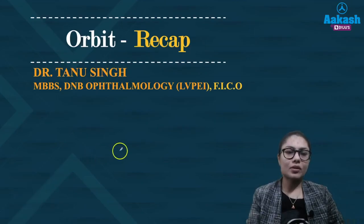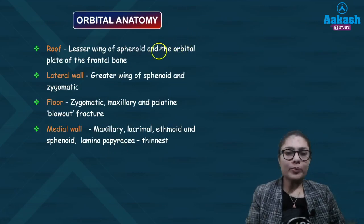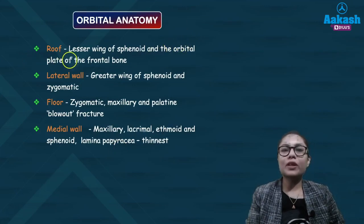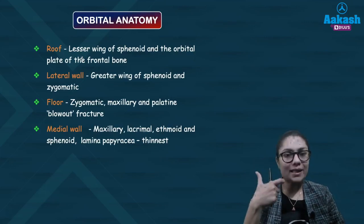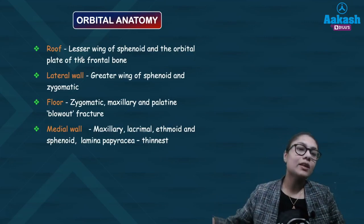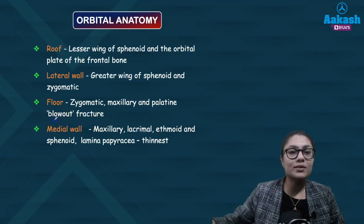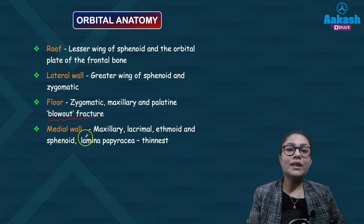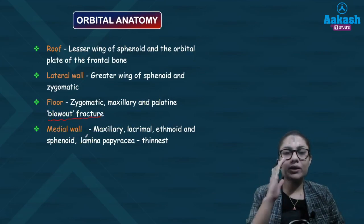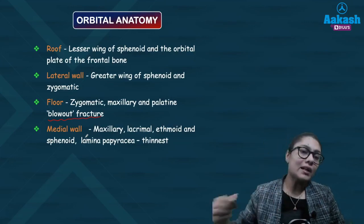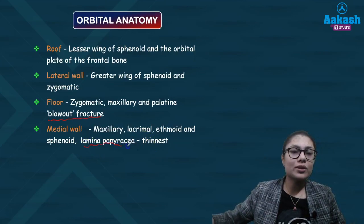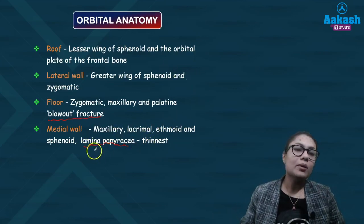Let's quickly revise orbital anatomy. The roof of the orbit is formed by the lesser wing of sphenoid and the orbital plate of frontal bone. The lateral wall is formed by the greater wing of sphenoid and the zygomatic bone, and it is the strongest wall. The floor is formed by the zygomatic bone, maxillary, and palatine bone. Medially, there is the maxillary bone, lacrimal bone, perpendicular plate of ethmoid, and sphenoid. The medial wall is the thinnest and is known as lamina papyracea.